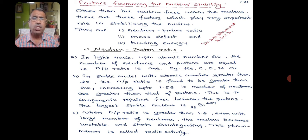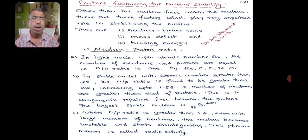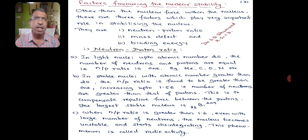Let us study these three one by one. Coming to the neutron-proton ratio: in light nuclei, up to atomic number 20, the number of neutrons and protons are equal, that is, the n/p ratio is 1. For example, helium has 2 protons and 2 neutrons; carbon has 6 protons and 6 neutrons; oxygen has 8 protons and 8 neutrons; nitrogen has 7 protons and 7 neutrons. In all these cases, the n/p ratio is 1.